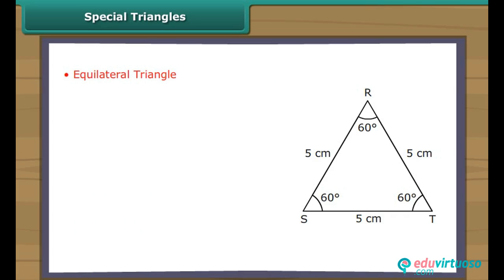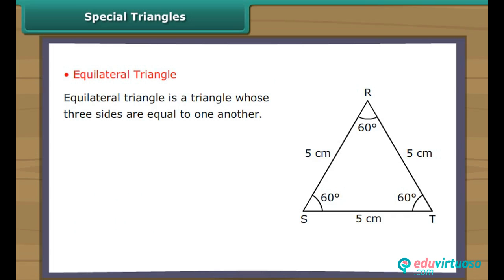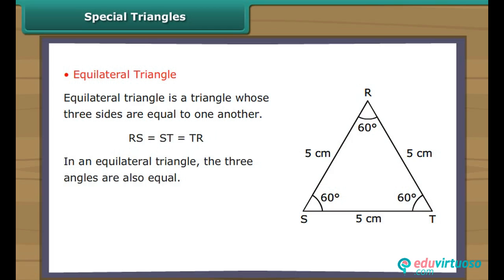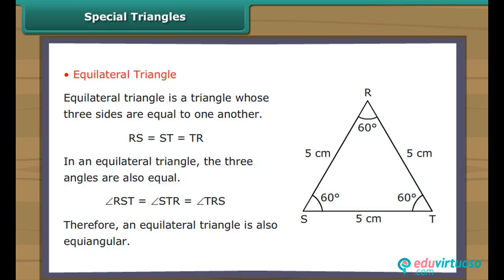Equilateral Triangle. An equilateral triangle is a triangle whose three sides are equal to one another. In triangle RST, RS equals ST equals TR. In an equilateral triangle, the three angles are also equal. In triangle RST, angle RST equals angle STR equals angle TRS. Therefore, an equilateral triangle is also equiangular.